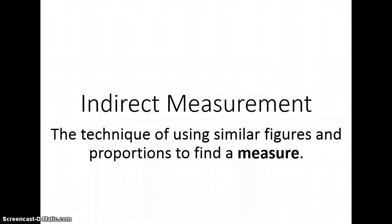Now let's talk about indirect measurement very quickly. This is the technique for using similar figures and proportions to find a measure. And we use this a lot with things that are very difficult to measure, like the height of a tree or the height of a building, where I don't really have a tool that will measure that.